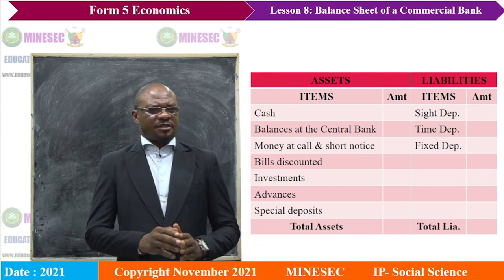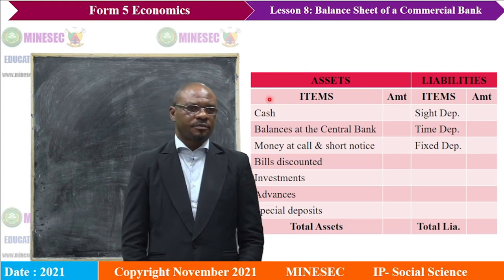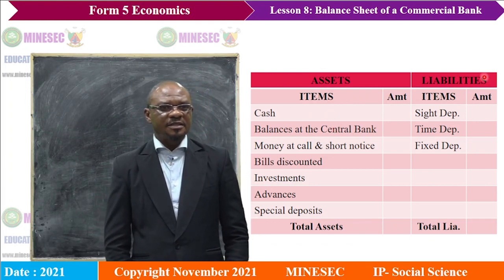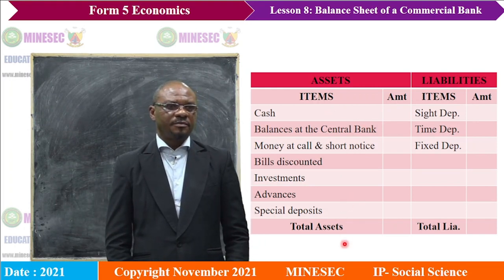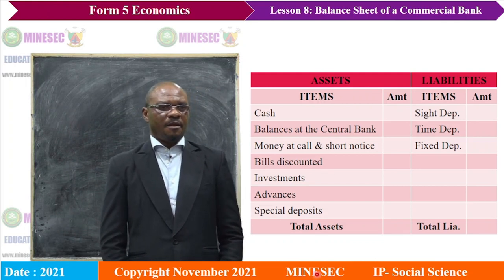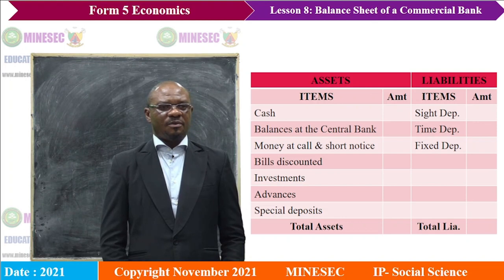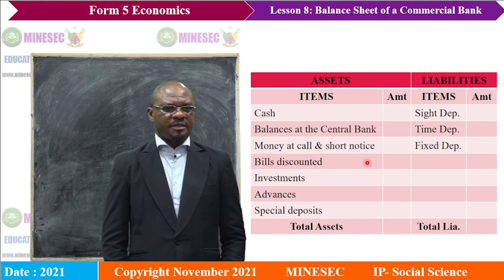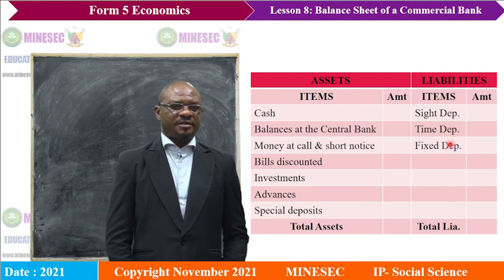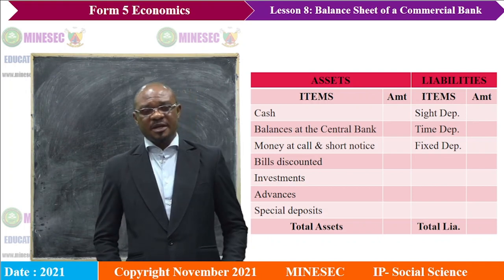A typical balance sheet of a commercial bank will look as follows. The assets of the bank include: cash, balances at the central bank, money at call and short notice, bills discounted, investments, advances, and special deposits. For the liabilities, we have sight deposits, time deposits, and fixed deposits. These are liabilities because when customers come for their money, the bank has to pay back.